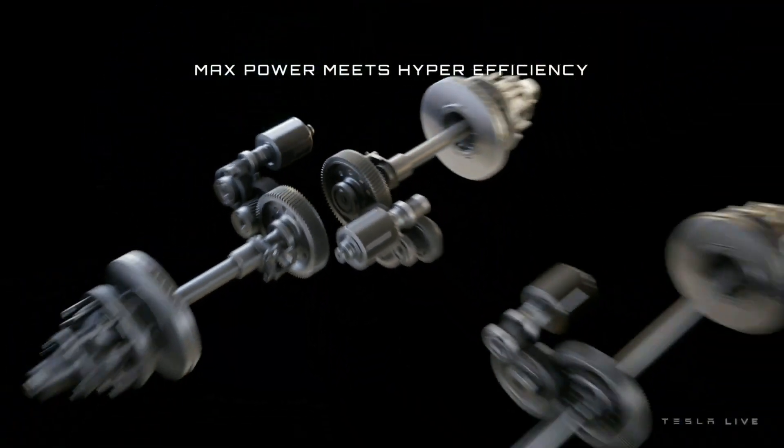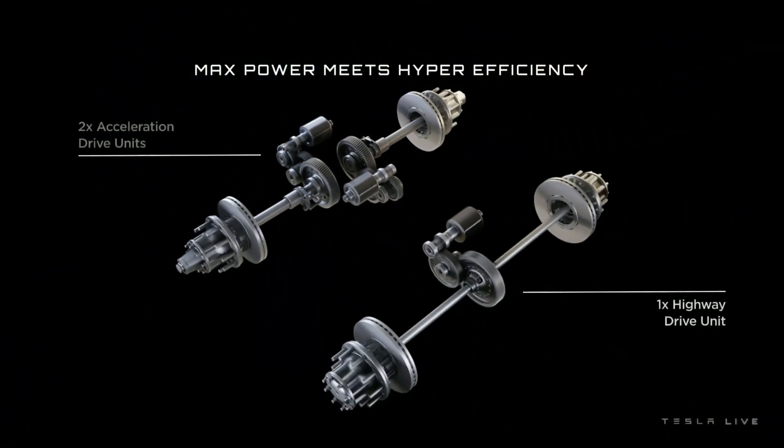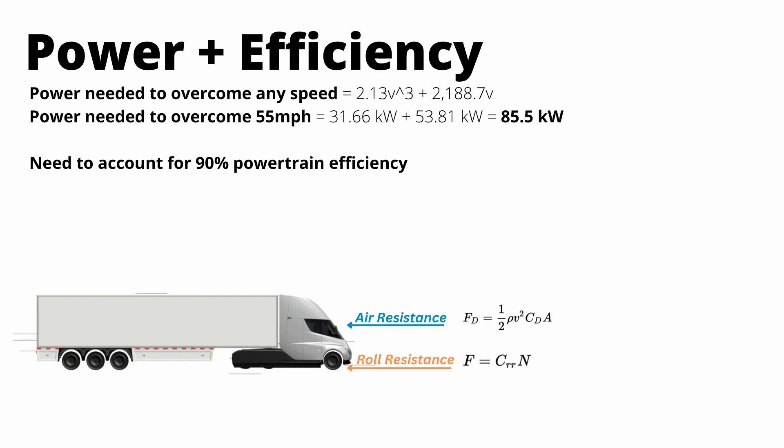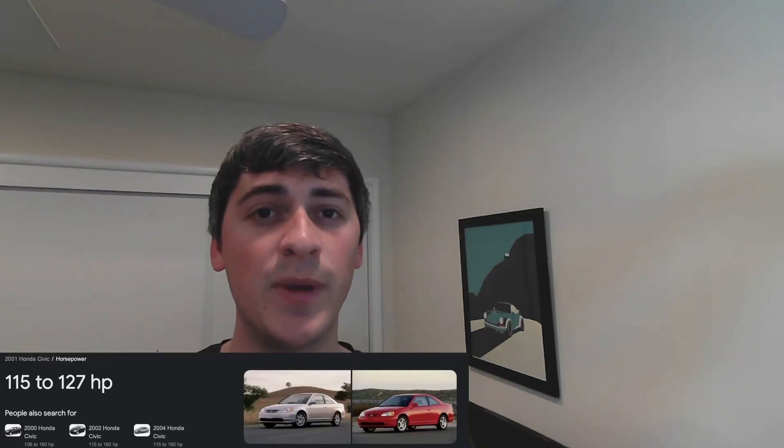We know EVs are not 100% efficient, so we need to account for powertrain loss. We're going to use a 90% efficiency figure, and with that, we see that we actually need to pull about 95 kilowatts from the battery to maintain 55 miles an hour on flat ground. When you think about it, 127 horsepower really isn't that much to keep something so big moving at 55 miles an hour. It's actually pretty impressive.